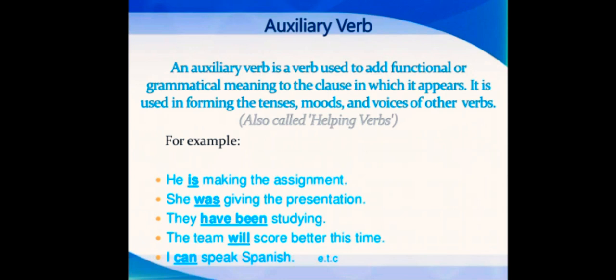Irregular verb is the opposite of the regular verb. Examples jaise see, saw, seen; go, went, gone; take, took, taken. These are irregular verbs. Now the auxiliary verbs. An auxiliary verb is a verb used to add functional or grammatical meaning to the clause in which it appears. It is used in forming the tenses, moods, and voices of other verbs, also called helping verbs. Examples: He is making the assignment. She was giving the presentation. They have been studying. The team will score better this time. I can speak English.